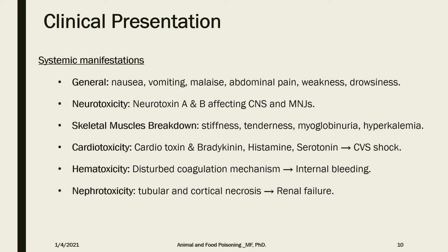Bleeding may occur from external wounds with increased external bleeding, or as spontaneous systemic bleeding in the form of epistaxis, hemoptysis, hematemesis, rectal bleeding, melena, hematuria, and sometimes vaginal bleeding in females. Subcutaneous manifestations of bleeding include petechial hemorrhages, purpura, and ecchymosis. Sometimes it progresses to intracranial hemorrhage, which is a life-threatening condition.